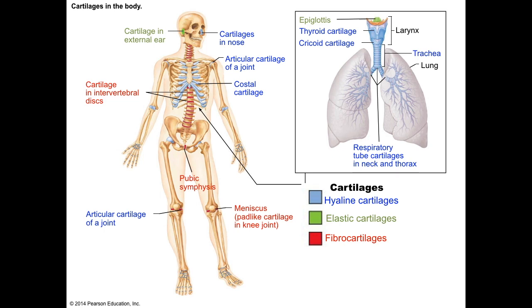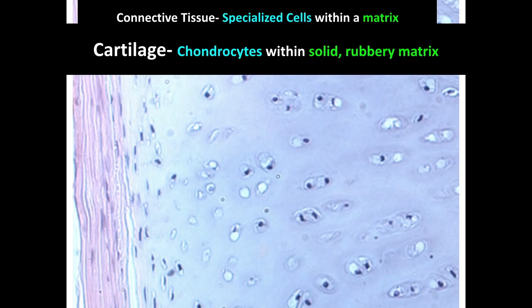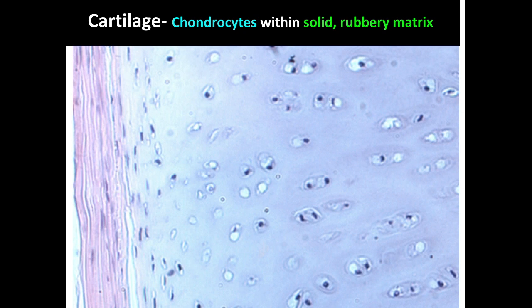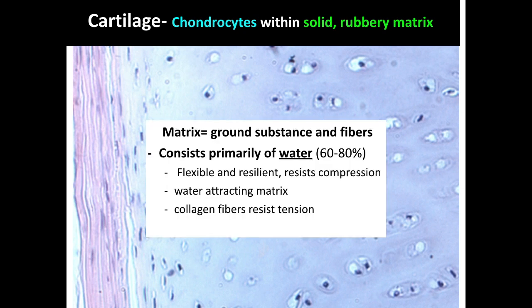All these cartilages have special properties but they all share some common characteristics. As always with connective tissue, it's specialized cells in a matrix, and the matrix is the important part. The specialized cells are chondrocytes, and the matrix is a solid rubbery matrix. If fibrous connective tissue is more like a tough fabric, cartilage matrix is more like a hard rubber.